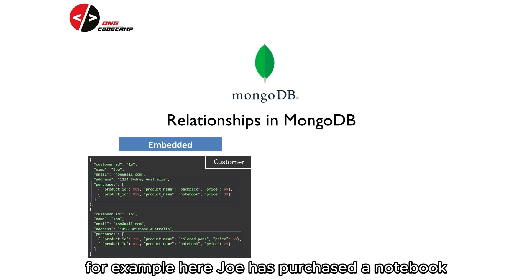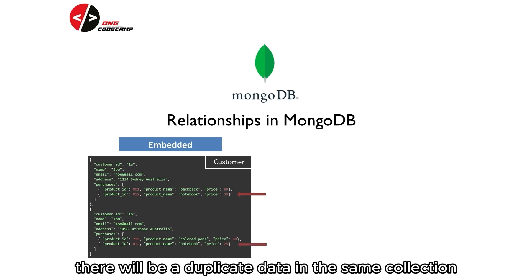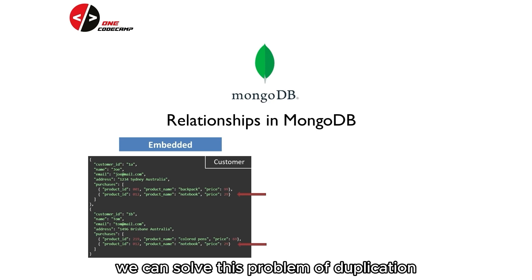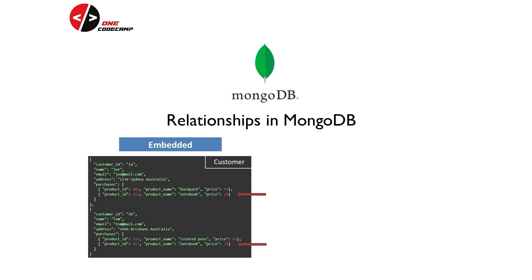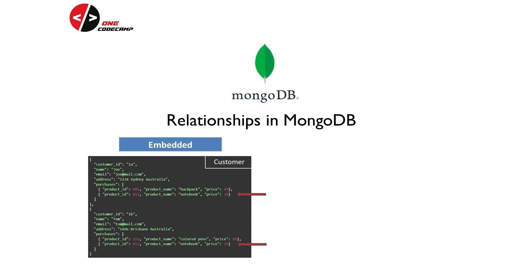However, one disadvantage of using Embedded Documents is the duplication of data. For example, Joe has purchased a notebook, and since Tom also purchased a notebook, there will be duplicate data in the same collection. We can solve this problem of duplication by using the other type of relation in MongoDB, which is References.